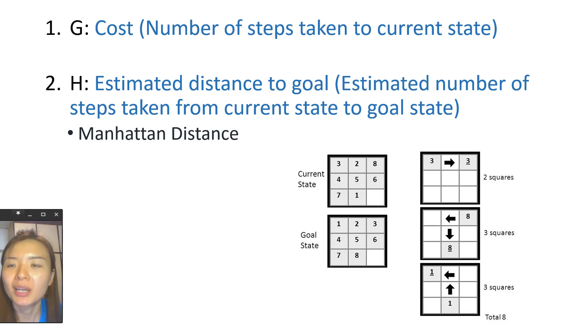A-star search uses two very important values. One is G, the cost from initial state to current state. In our case it's the number of steps taken. And next will be H, the estimated distance from current state to goal state. In our case we are using Manhattan distance to measure this H value.